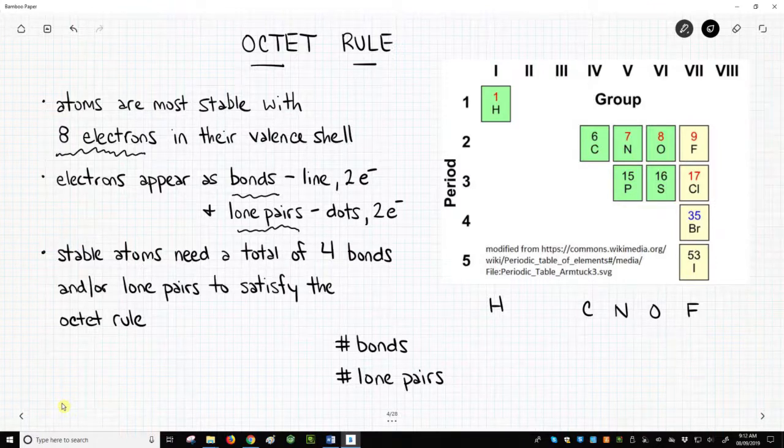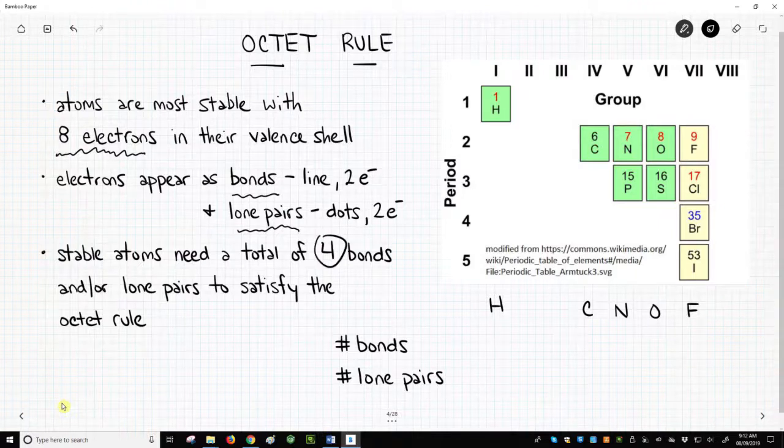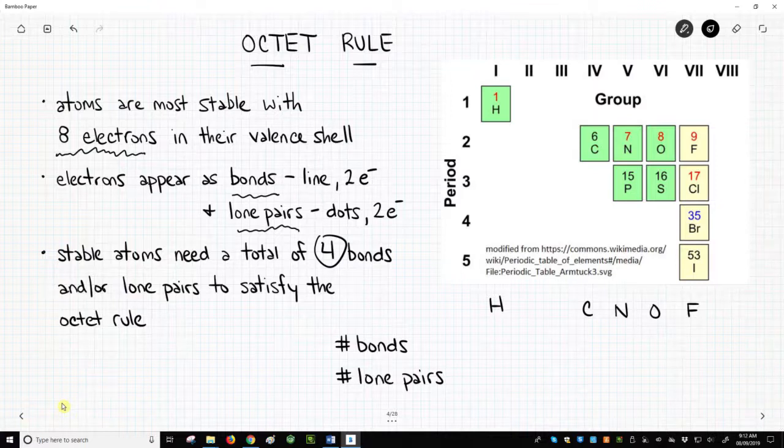Based on the octet rule, each stable atom in a molecule needs to have any combination of four bonds and or lone pairs. Fortunately for us, the ideal number of bonds and or lone pairs is very predictable based on the identity of the element.